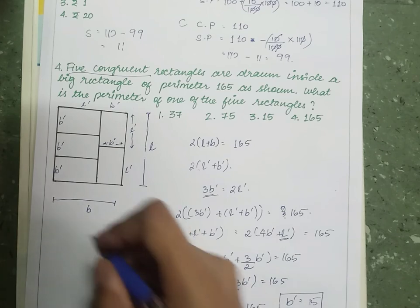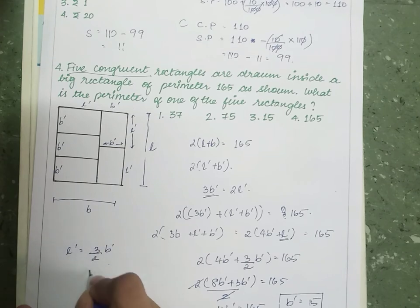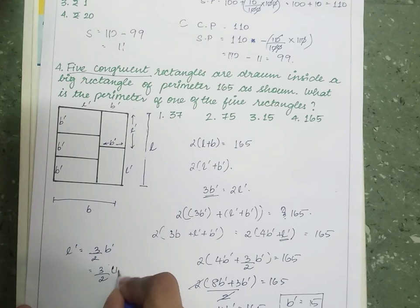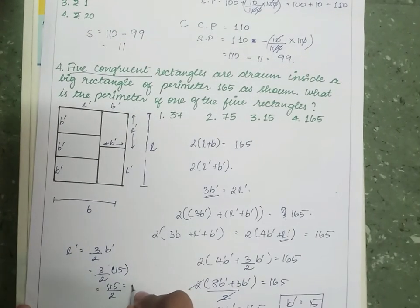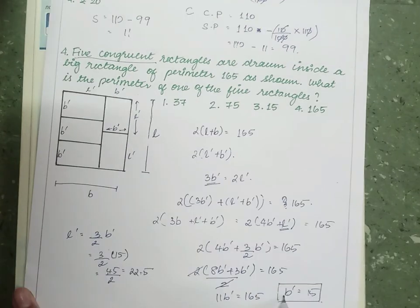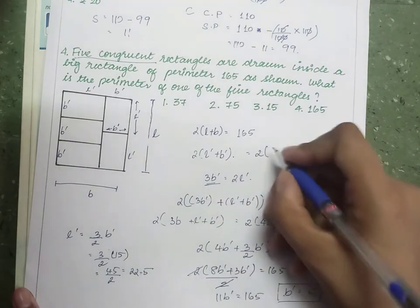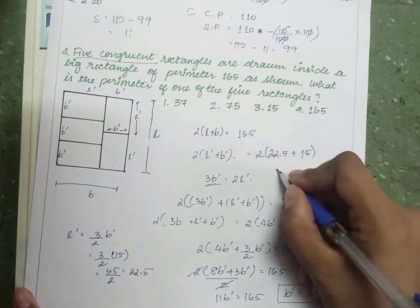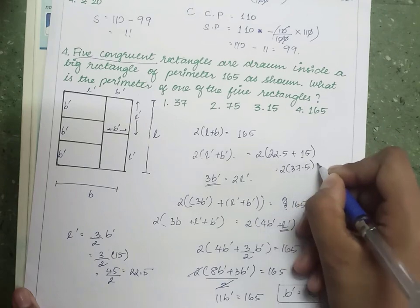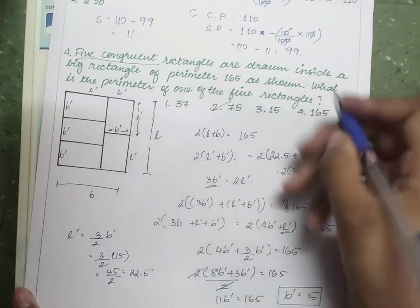With b' = 15, l' = (3/2) × 15 = 22.5. The perimeter of one small rectangle is 2(l' + b') = 2(22.5 + 15) = 2 × 37.5 = 75. Option 2 is the correct answer.